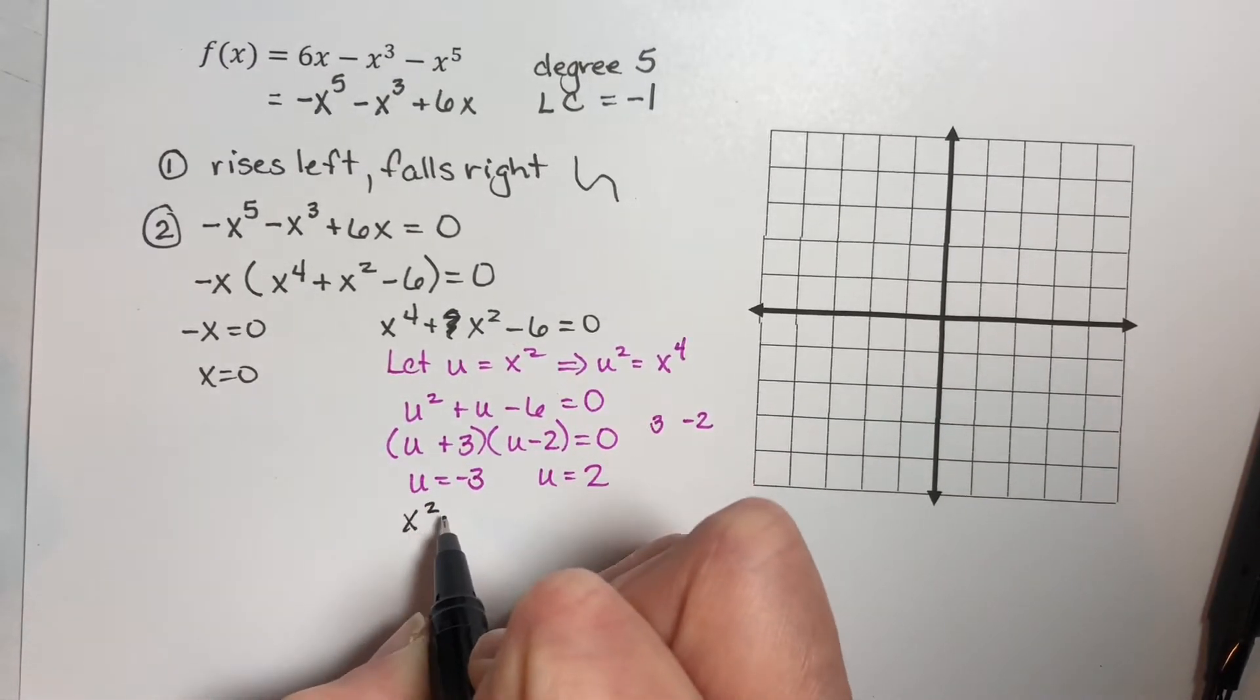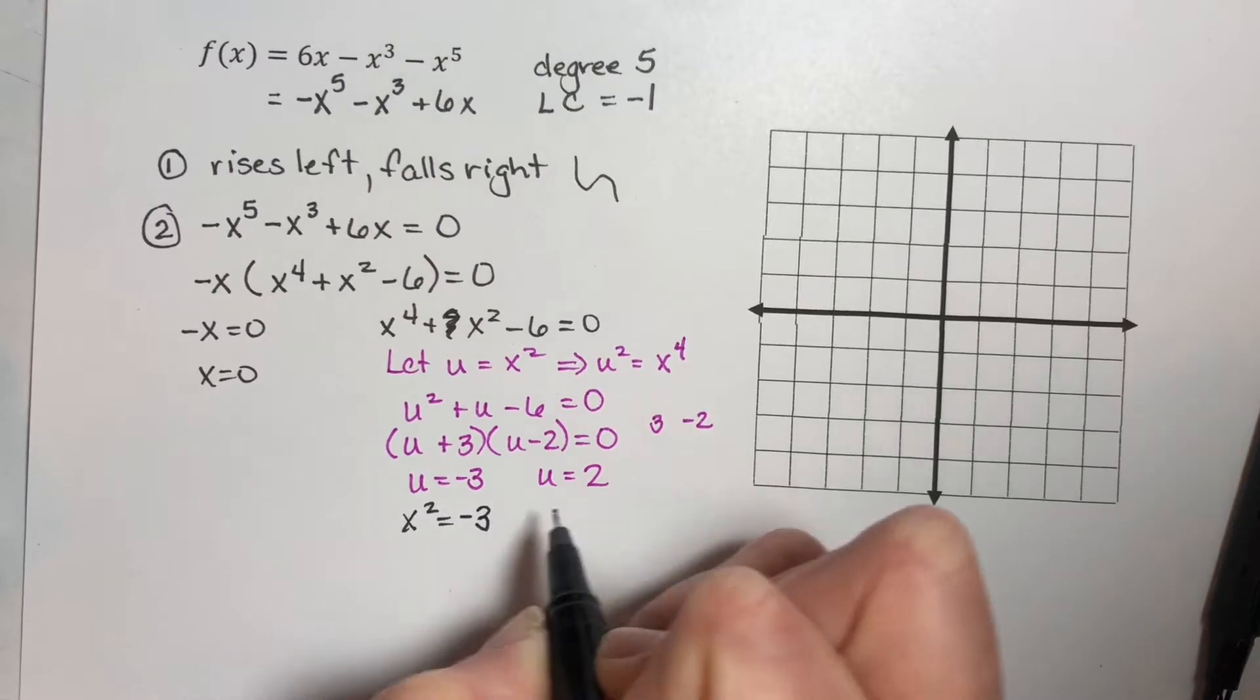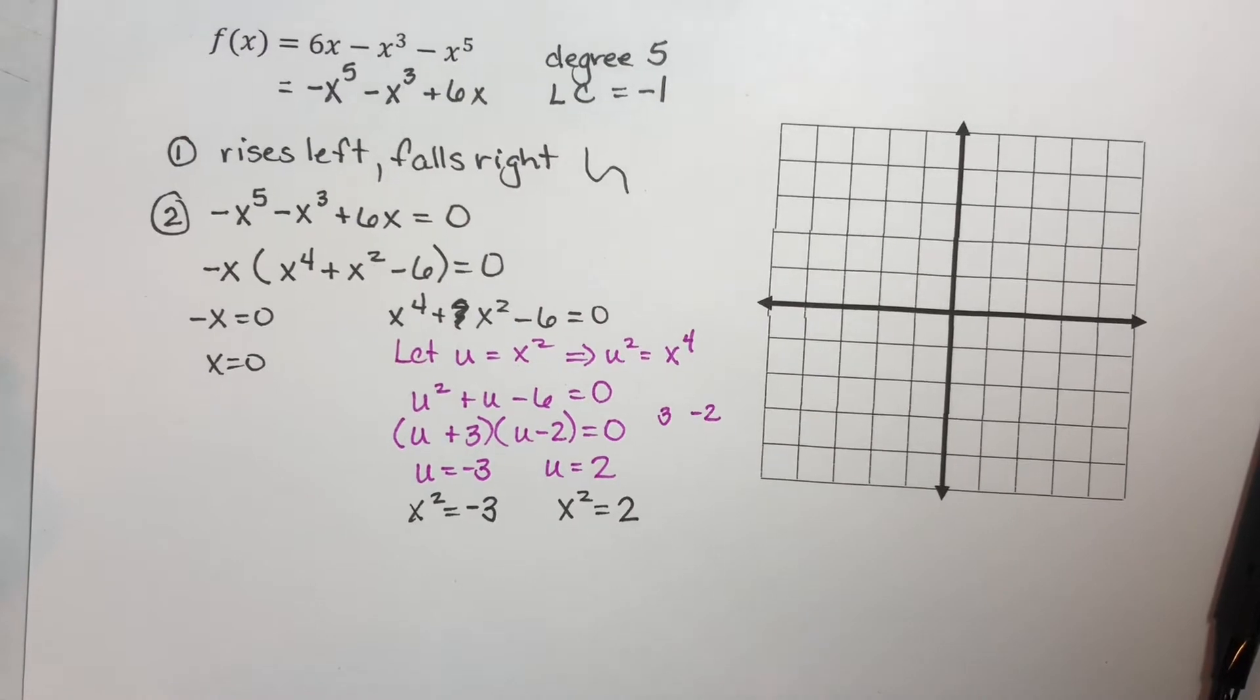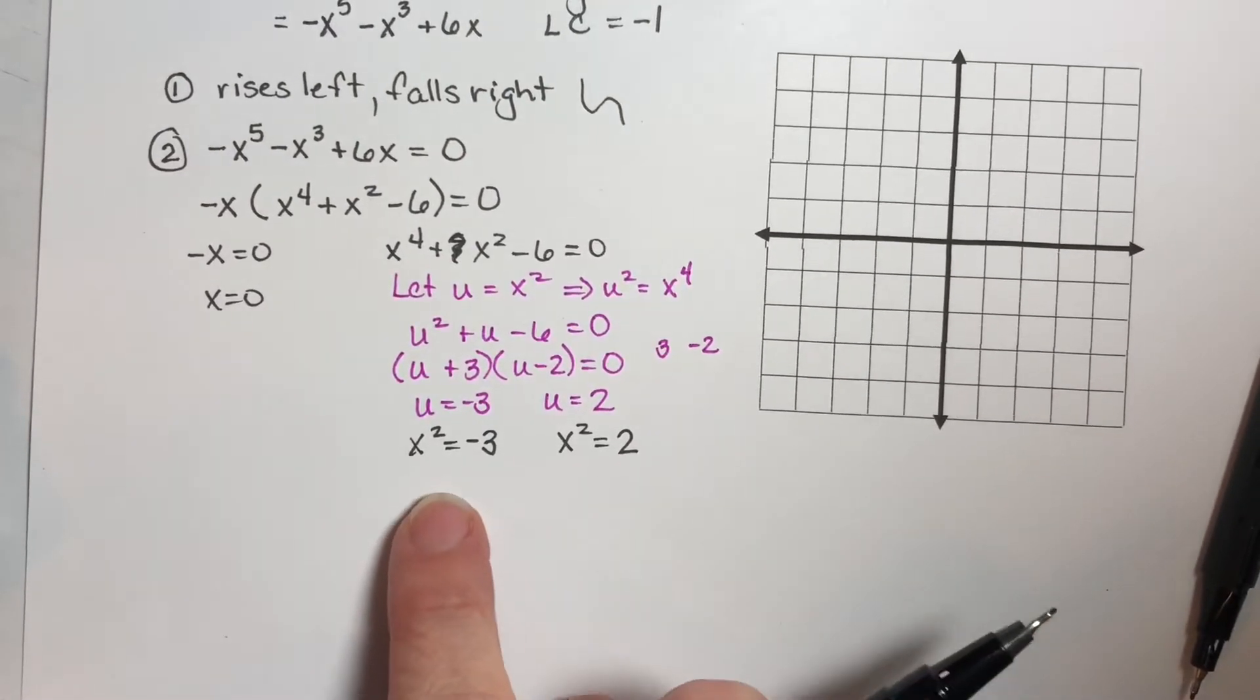This would say x squared is equal to negative three, and here x squared is equal to two.